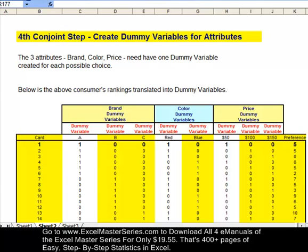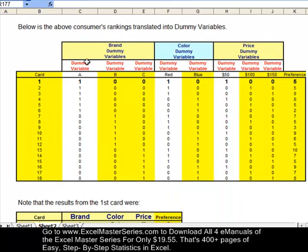And the fourth conjoint step is to create dummy variables for each attribute. There are three brand dummy variables, two color dummy variables, and three price dummy variables, one for each possible choice. There they are.